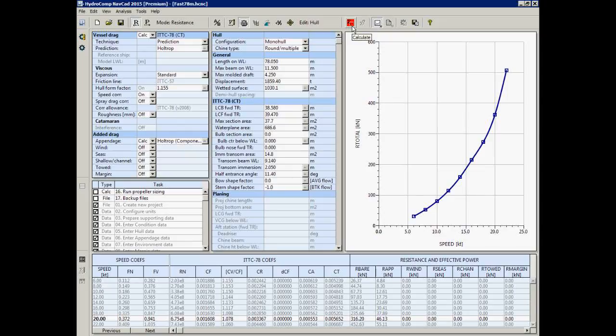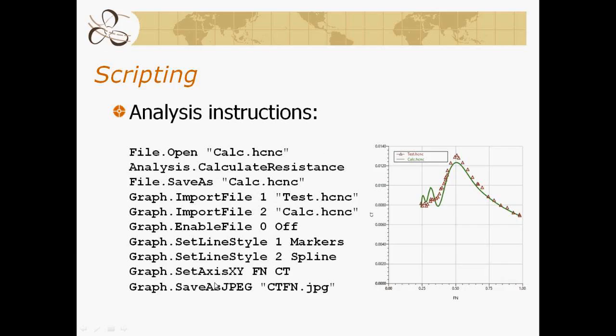Scripting can extend to reports and graphs as well. This set of instructions describes a typical example of how you might want to compare an analysis against a model test. We're going to open a file — calc.hcnc, the extension for the HydroComp NAVCAD software — calculate the resistance as part of the analysis group, and file-save-as to save it again. So we open the file, calculate the resistance, and save it again to ensure our resistance is up to date.